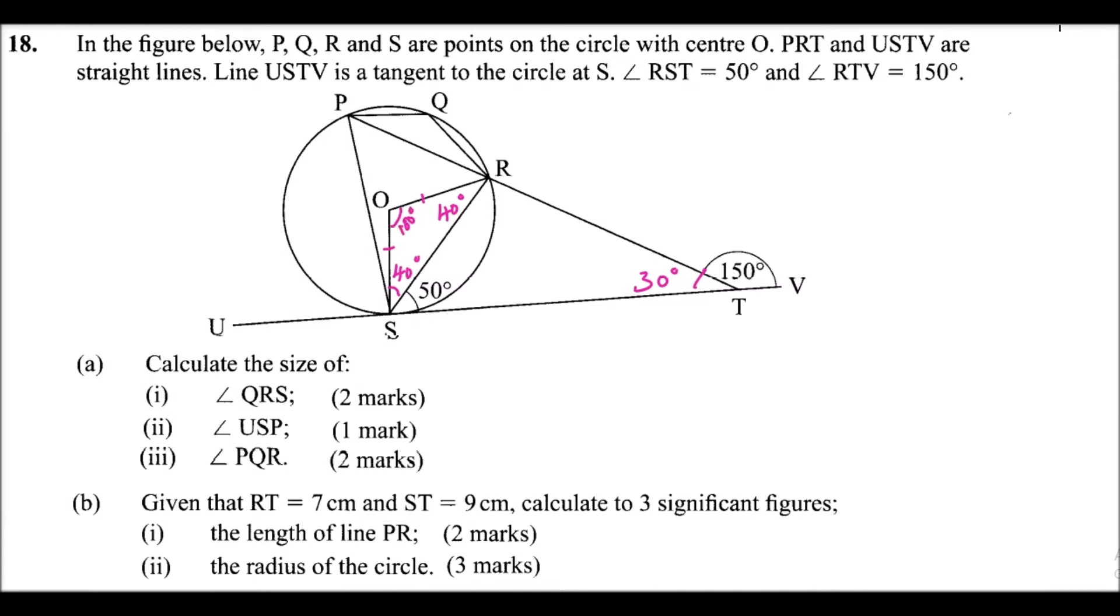And then we have this angle. We can use this property: the angle made by the tangent and the chord is equal to the angle subtended by the chord at the circumference. So this angle here is 50. Now, since we have this angle 30, this is 50, that adds up to 90.